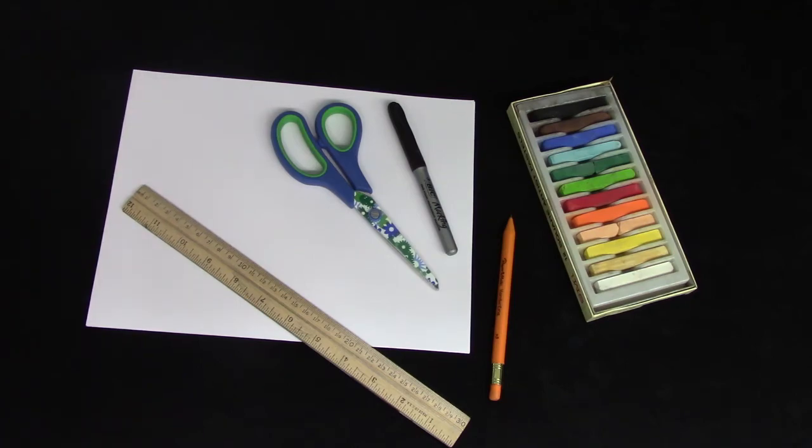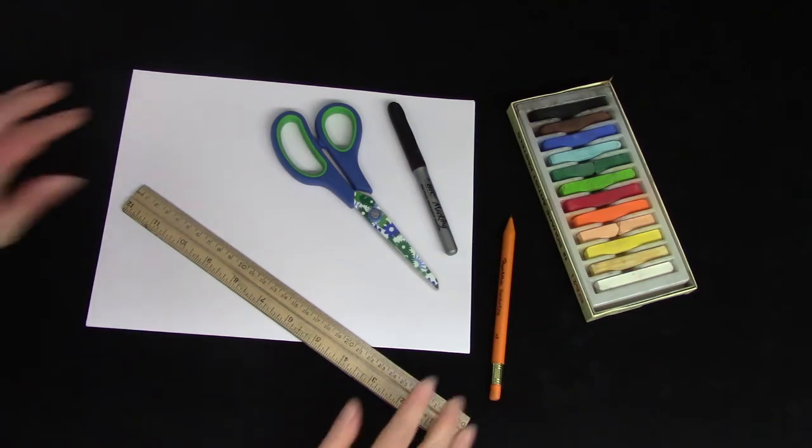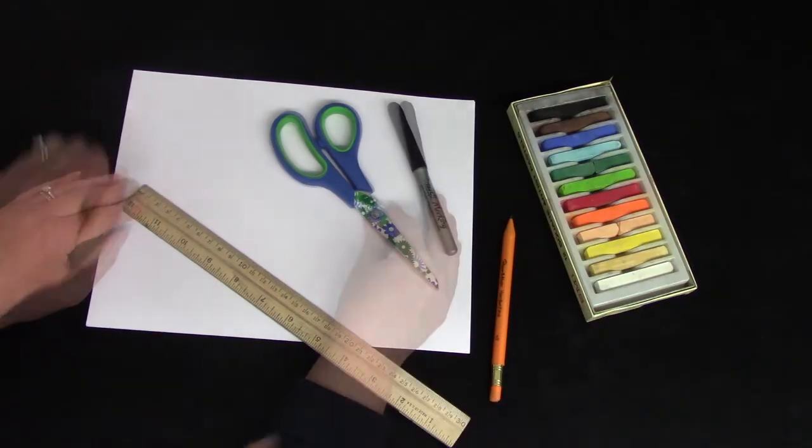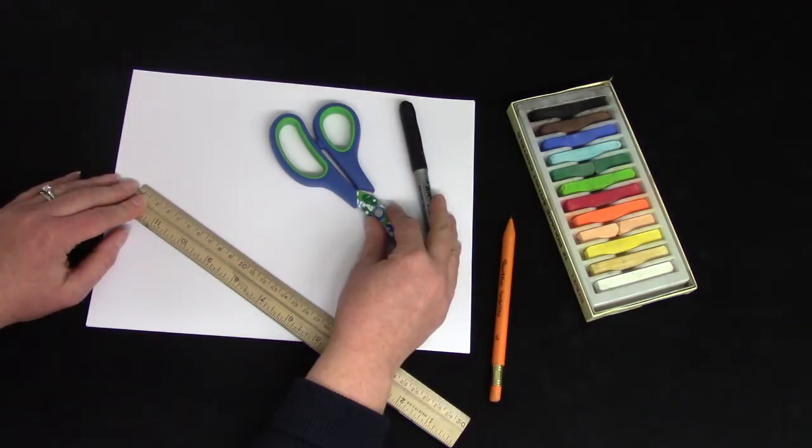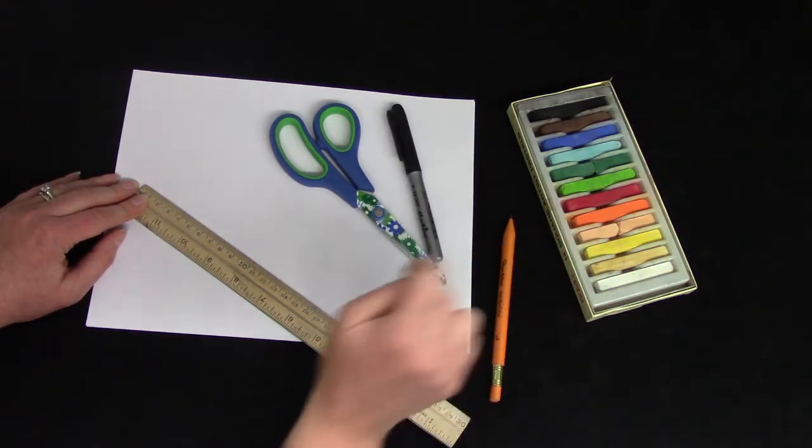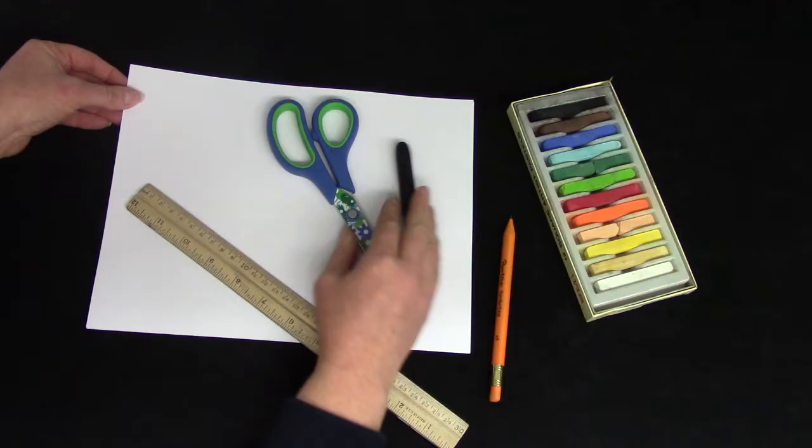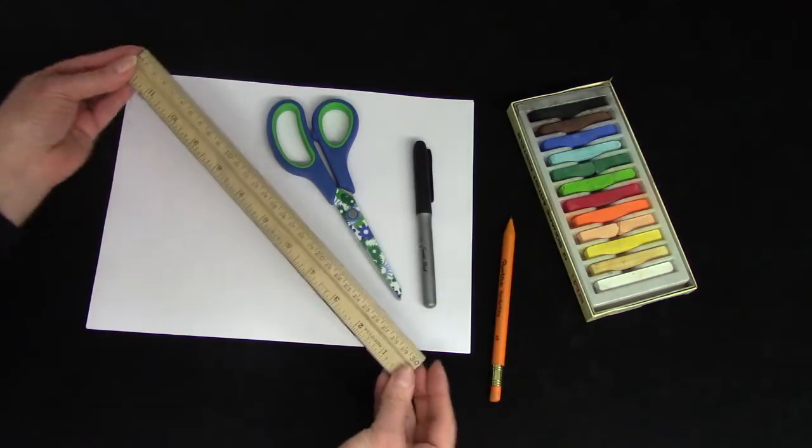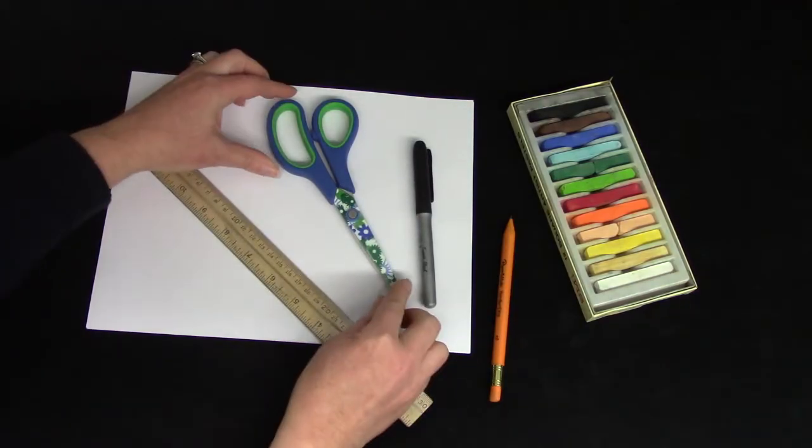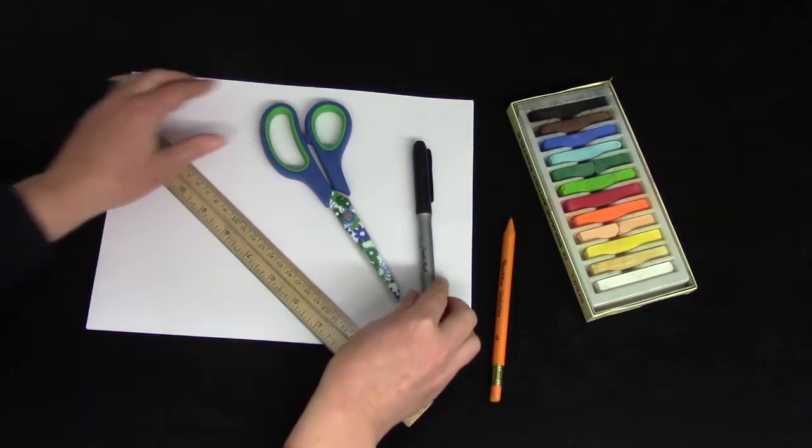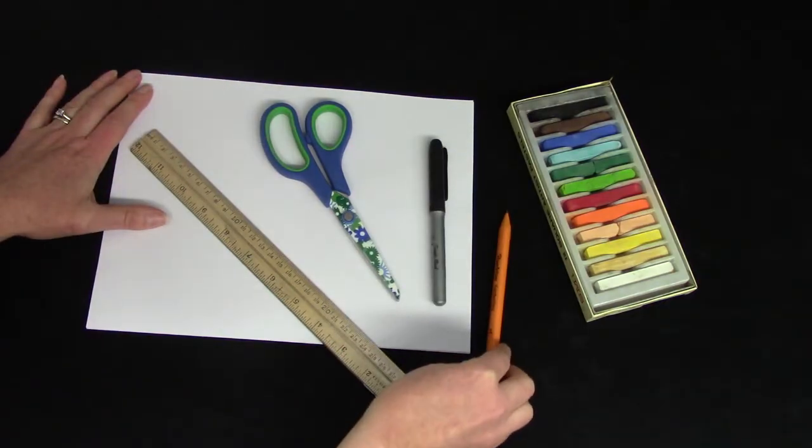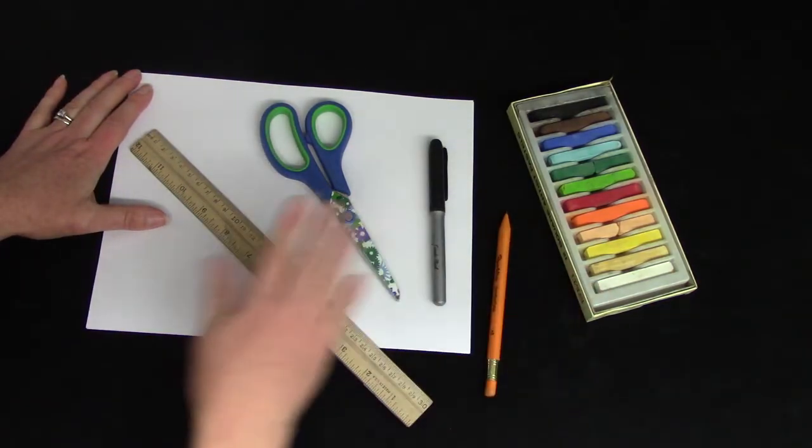Welcome to today's math lesson. Today we're going to be doing some fun art for math. We're going to be dividing squares into four pieces or fourths and we're going to be coloring by fourths. Well the first thing we need are some supplies. We're going to need a ruler, some scissors, a marker or a pencil, something to color with and paper.